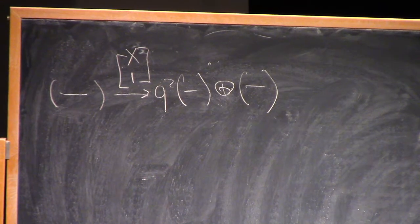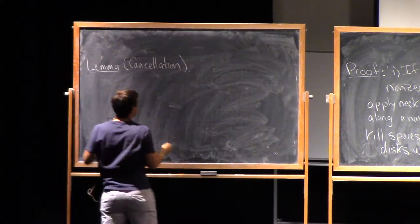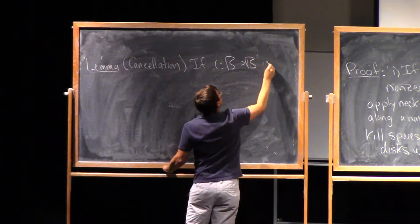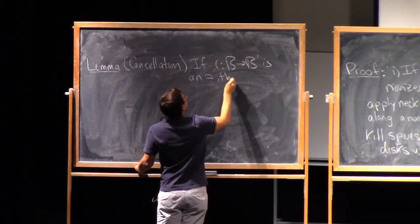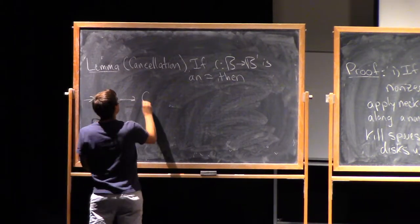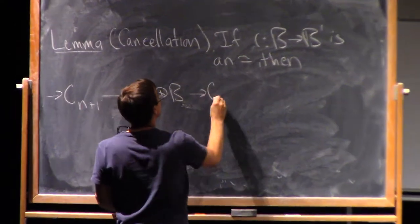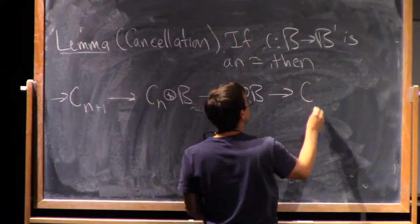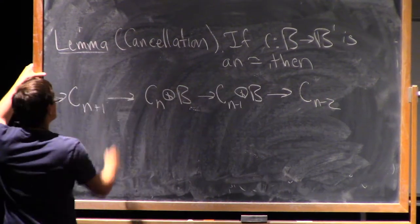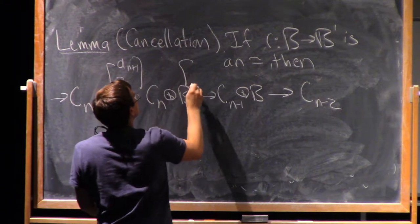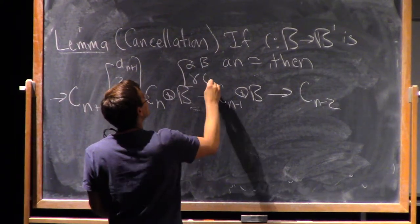This lemma is called the cancellation lemma. Sometimes this is also called Gaussian elimination. It says that if, say, i going from b to b prime is an isomorphism, then I'm going to write down a big chain complex. It looks like cn plus one goes to cn plus b, goes to cn minus one plus b prime, goes to cn minus two. Now I'm going to write down the maps in this chain complex. So let's call this dn plus one. This I'm going to put a question mark, because actually I don't care what it is. I'm going to call this alpha, beta, gamma, and here I'm going to use the isomorphism iota.